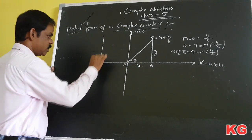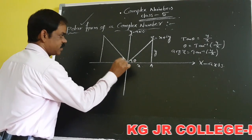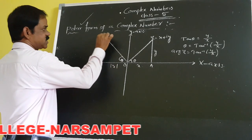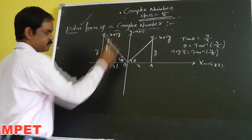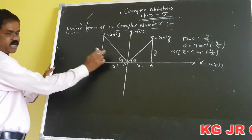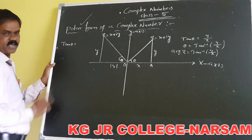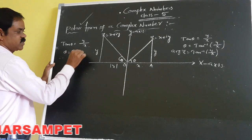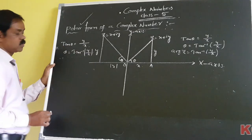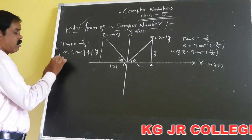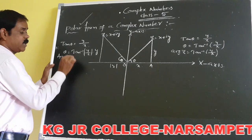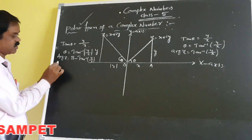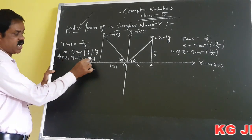Moving to the second quadrant, the modulus values are |X| and Y. From the second quadrant, tan θ equals Y by X, so θ equals tan inverse of Y by X. However, for the second quadrant, you have to consider the argument of Z equals π minus tan inverse of Y by X.